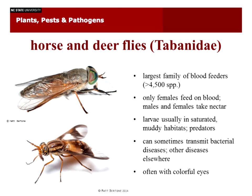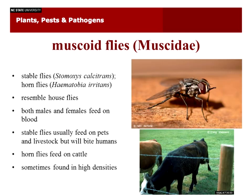They can sometimes transmit bacterial diseases and other diseases like some types of worms in other countries, but here in the U.S. bacterial transmission is not very common. They often have very colorful, patterned eyes — you can see this deer fly with nicely patterned eyes, as does this green-head, as most people call them at the beach. They're very painful biters with very large, sharp mouth parts, and they make a very large wound to access blood. Very annoying, but very beautiful.